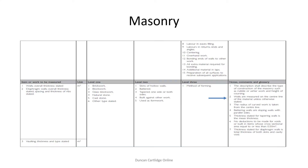Here is an extract from section 14 of New Rules of Measurement 2. Note that we are instructed to measure masonry using the centreline, the mean girth, or average length.